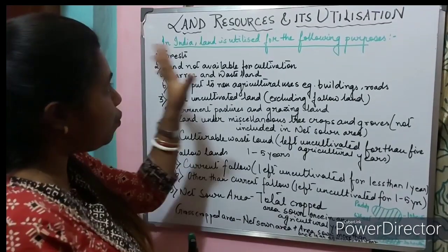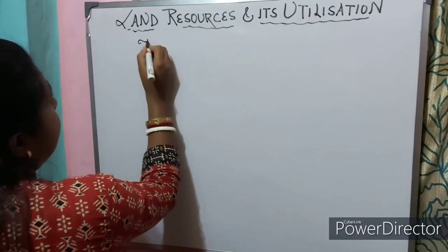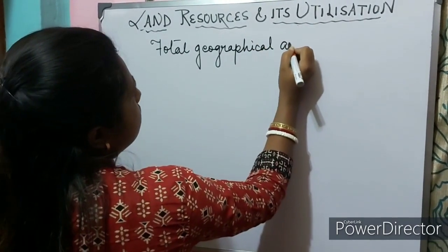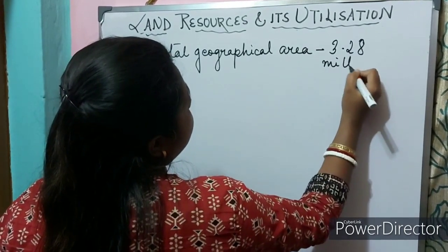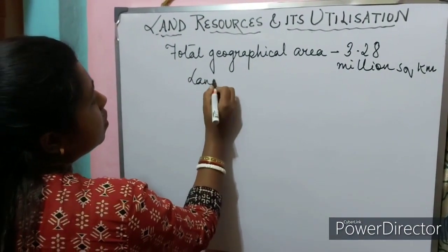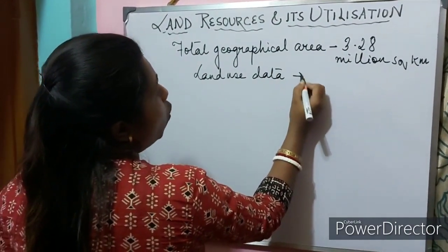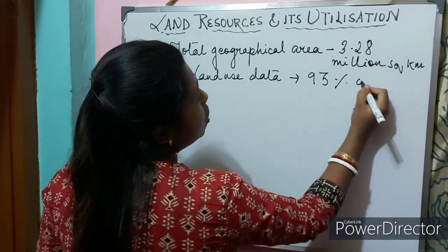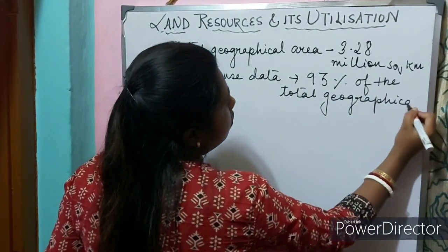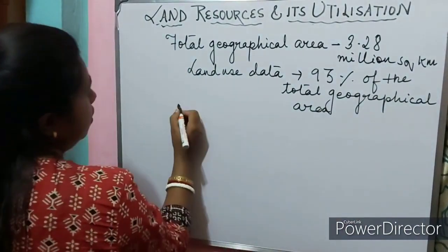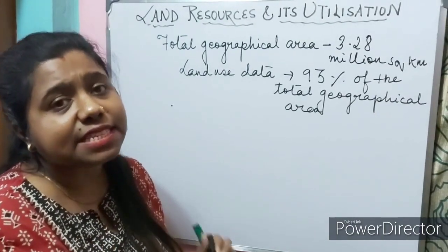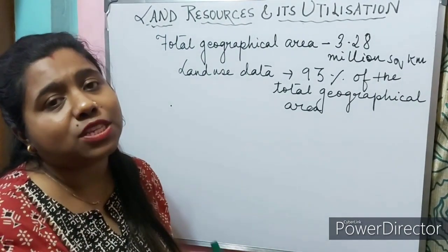Let us move ahead with the total geographical area of India. India's total geographical area is 3.28 million square kilometers. However, land use data is only available for 93 percent of the total geographical area. The reason being: most of the north-eastern states of our country except Assam - the land use report has not been done fully.